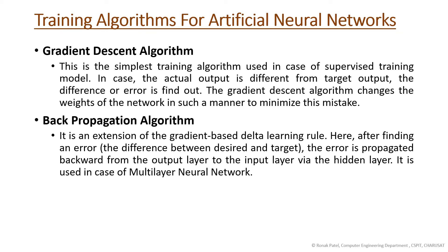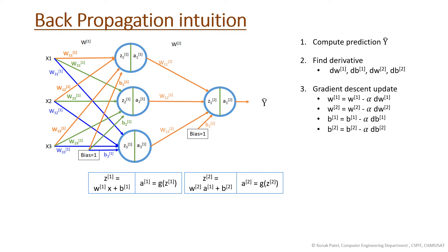The backpropagation algorithm is an extension of the gradient-based delta learning rule. The delta learning rule states that the weight update depends on the difference between the target and the actual output. After finding the error, that error is propagated backward from the output layer to the input layer via the hidden layers. It is used in the case of a multi-layer neural network where we have multiple layers.